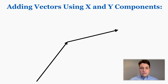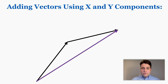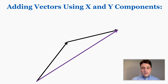As you can see, I've already connected them tip to tail and I need to find the resultant vector. The problem is I don't have a clear way of doing that right now, so I'm going to show you the method we use for finding the resultant vector of two smaller vectors that have angles to them.